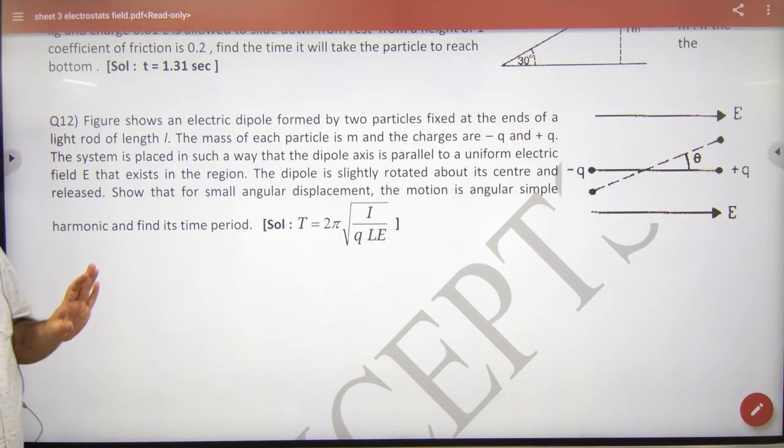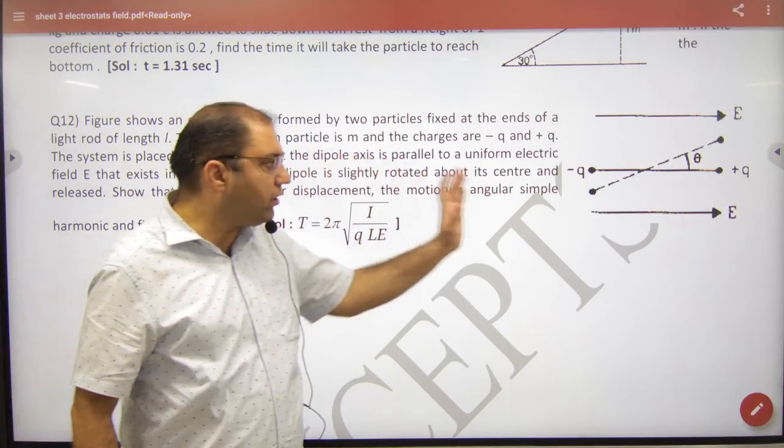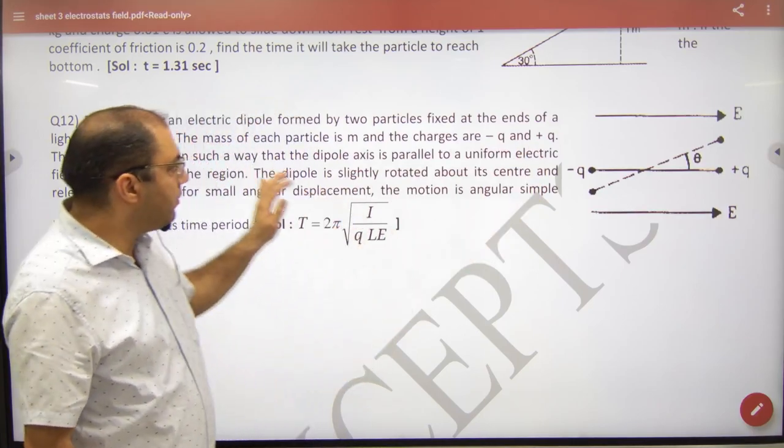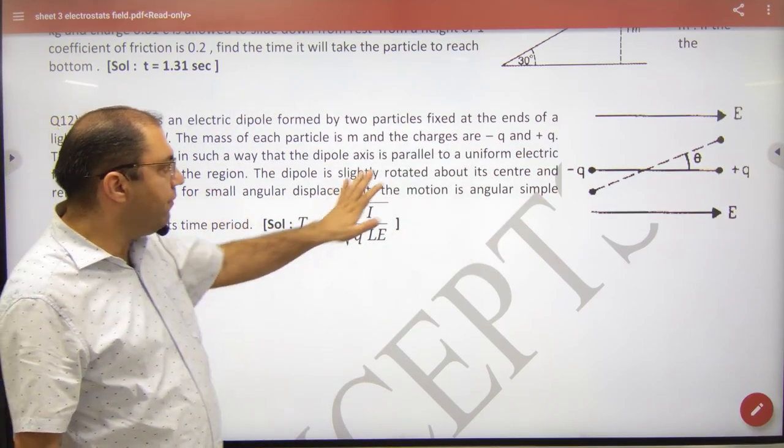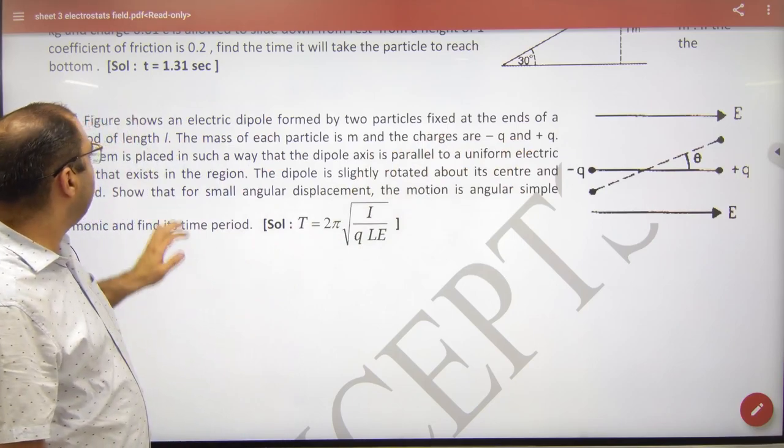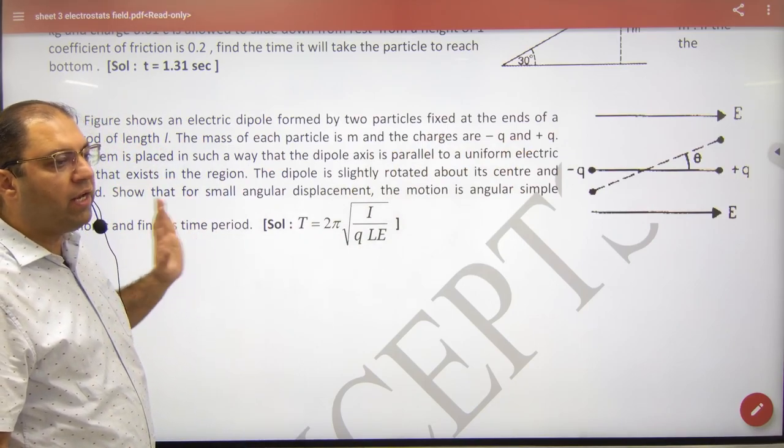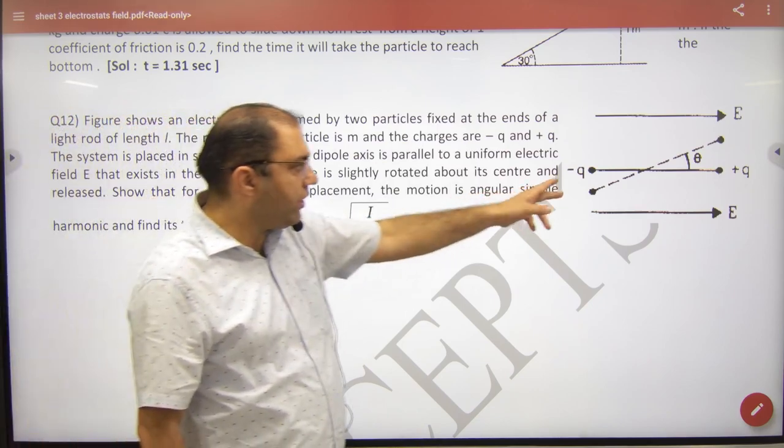In this question, it is given that the electric field is on the right side. There is a dipole, minus q and q. And the length of the dipole is given as L.